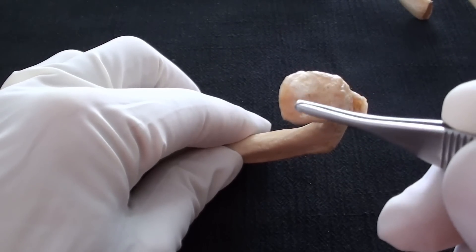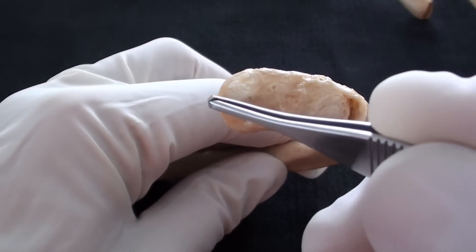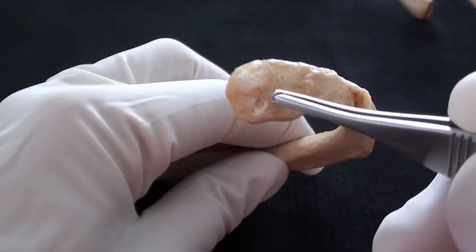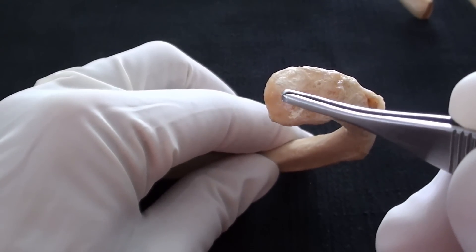Between those two facets, there is a tiny bony ridge called the crest of the ribs head, and the crest will be leveled with intervertebral disc.